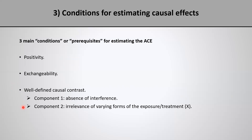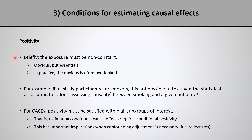I'm going to dedicate one video to each one of those conditions, and today I'm going to be talking about positivity. Briefly, what that means is that the exposure must not be constant — that is, you should have non-zero variance in the study population. You might be thinking this is obvious, but although it is obvious, sometimes in practice the obvious gets overlooked, and because positivity is essential, it is important for us to explicitly mention it.